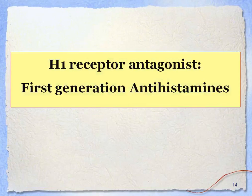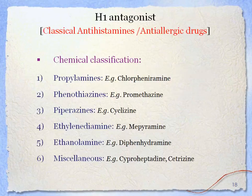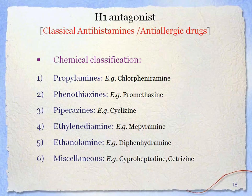First generation H1 receptor antagonists are rapidly absorbed from the gastrointestinal tract and widely distributed. Due to their lipophilicity, they readily cross the blood-brain barrier. Their duration of action is four to six hours. Chemically, classical antihistaminics or H1 antagonists are divided into six classes: propylamine derivatives (e.g., chlorpheniramine), phenothiazines (e.g., promethazine), piperazines (e.g., cyclizine), ethylenediamines (e.g., mepyramine), ethanolamines (e.g., diphenhydramine), and others including cyproheptadine and cetirizine.